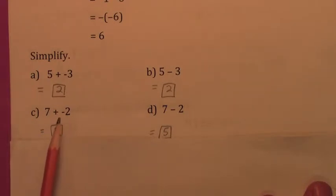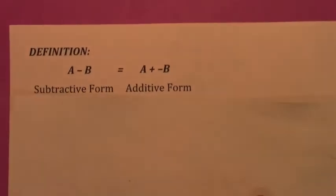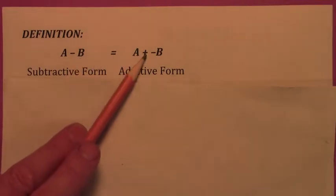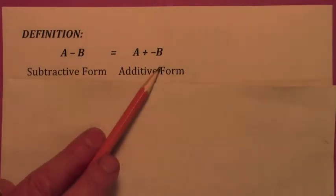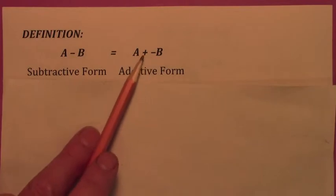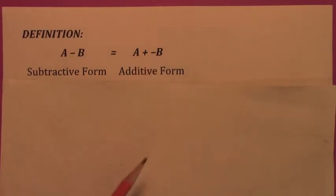Whenever you add the opposite of a number, that's the same thing as subtracting the number. And that's precisely how we define subtraction. When you subtract one number minus another, it's the same thing as adding the opposite of the second number. Subtracting a number is the same thing as adding the additive inverse, or the opposite of that number.